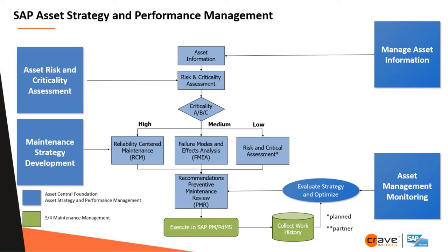Most manufacturing companies are using RCM, FMEA, and root cause analysis, but not in a proper system. This is where SAP IAM provides value. SAP integrates our S/4HANA strategies, work orders, and task lists — these are the main areas where your operations team will work. If there is an issue, you can modify strategies and, in Crave, we have programs to transfer these back to S/4HANA with no manual work.